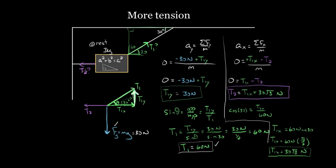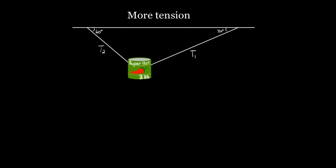T2 equals 30 root three Newtons, and that shouldn't be surprising. This horizontal force just has to equal T1X — those are the only two horizontal forces, and we need them balanced since there's no horizontal acceleration. We found T1X was 30 root three, so T2 also has to be 30 root three. We figured out T1 equals 60 Newtons, and T2 equals 30 root three Newtons. Now we're ready to figure out the super-hot jalapeño problem. We'll do that in the next video.